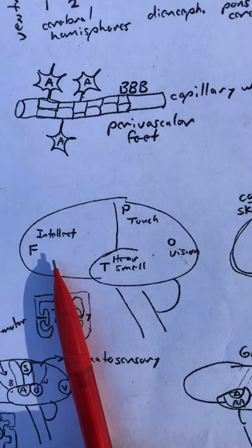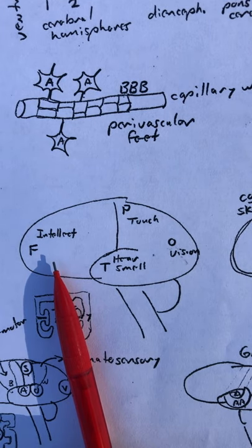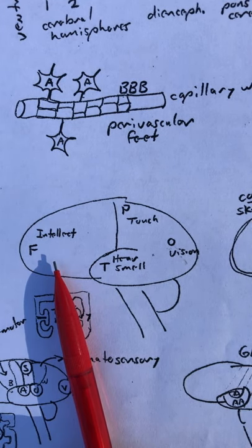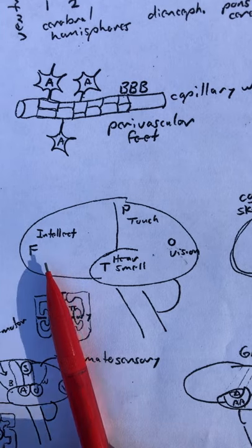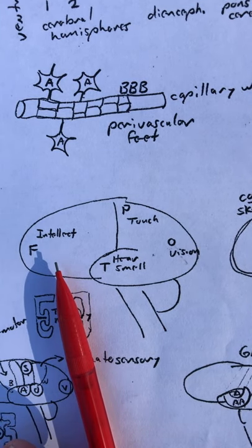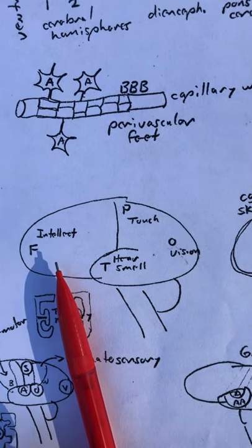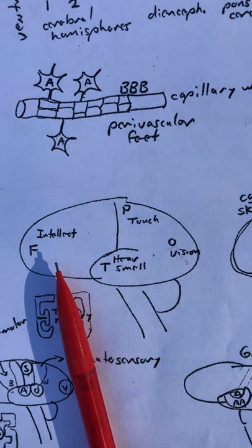The frontal lobe doesn't have much to do when it comes to sensations, but this is, in many ways, the civilized part of your brain, most civilized part of your brain. This is where your thinking, your reasoning happens to be.